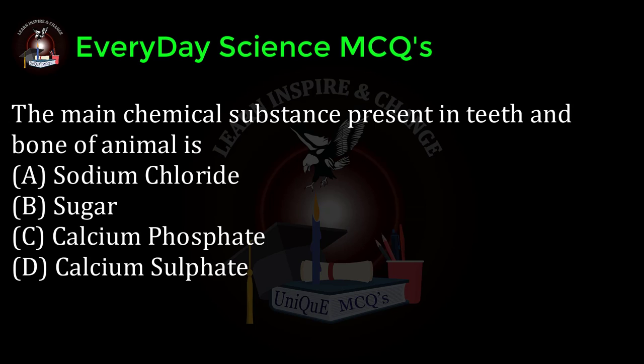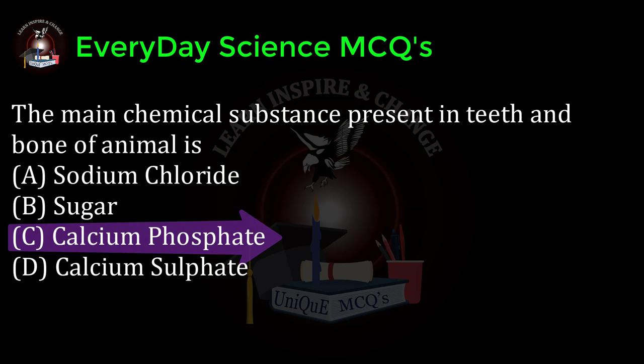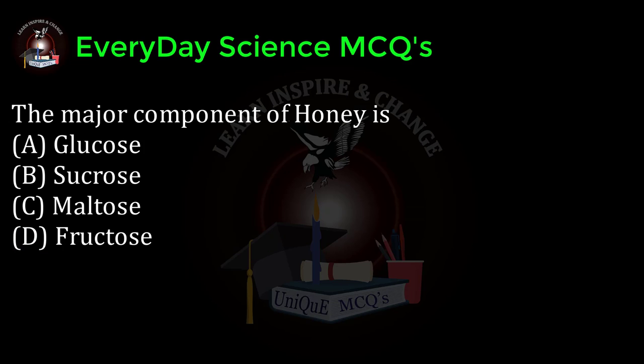The main chemical substance present in teeth and bone of animals is: a) sodium chloride, b) sugar, c) calcium phosphate, d) calcium sulfate. Correct answer: c.